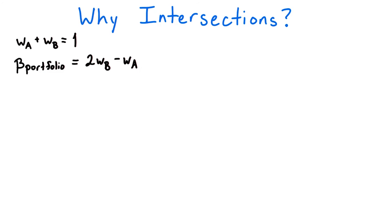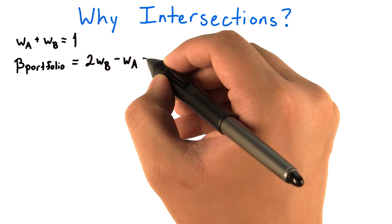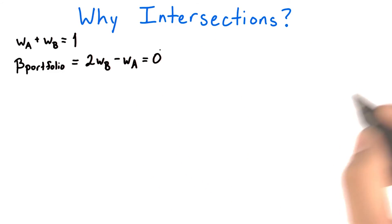Having a beta value of 0 means that the portfolio is uncorrelated with the market, so it has minimal market risk. Suppose I want to choose my weights so that I minimize market risk. Then that means I need the weights to satisfy the equation 2W_B - W_A = 0. This gives me a second linear relationship between the weights of the stocks in my portfolio.